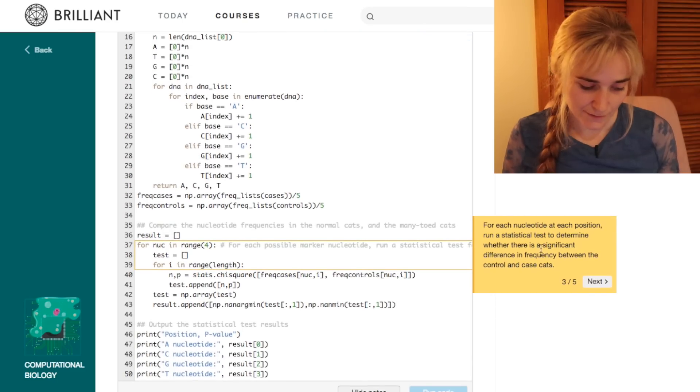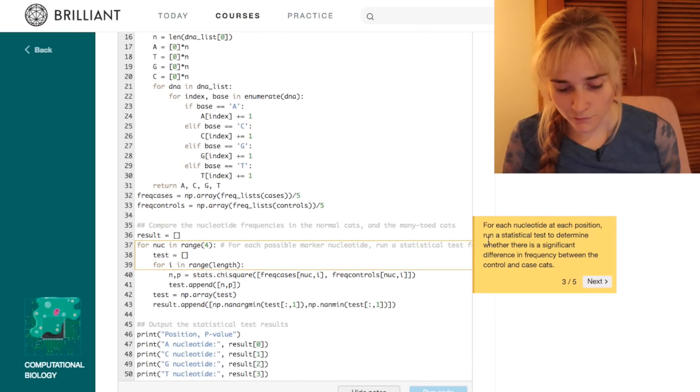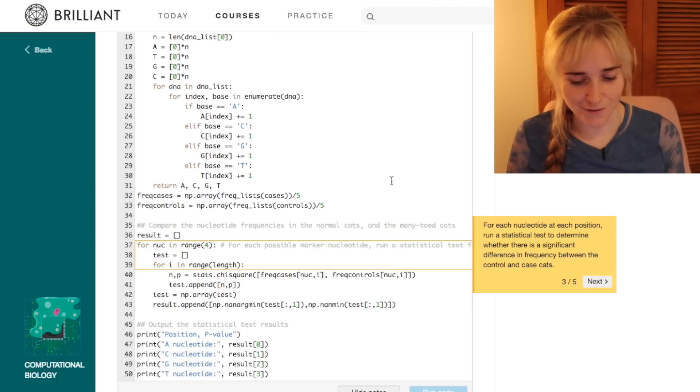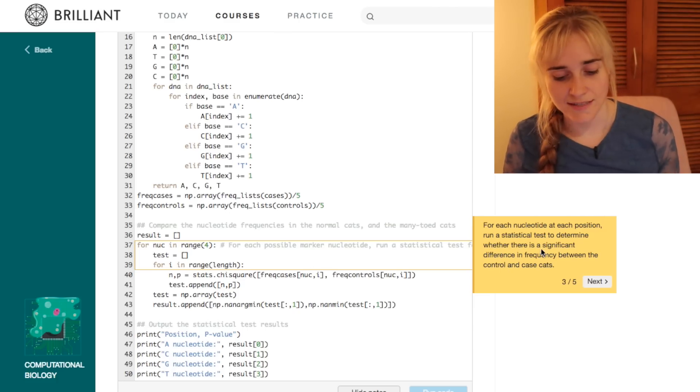We go through there, and for each nucleotide at each position, we run a statistical test. In this case, we're actually running the chi-squared test, which you might have heard of if you've done a bit of statistics, and we're using that to determine whether there is a significant difference in frequency between the control and the case cats.